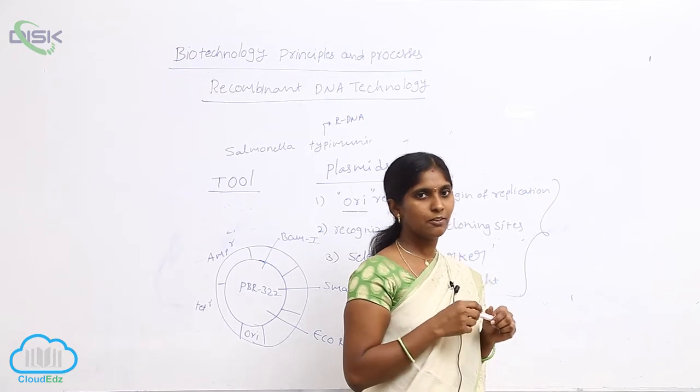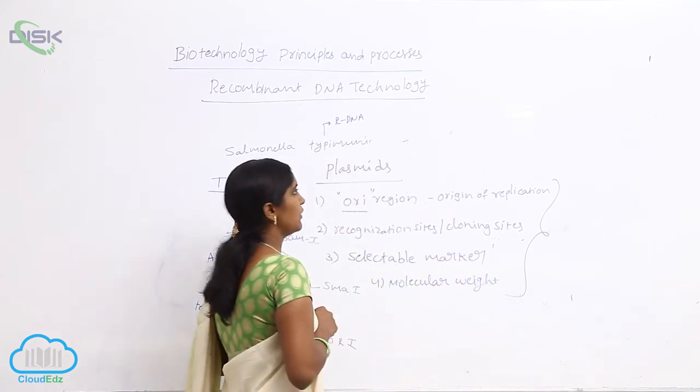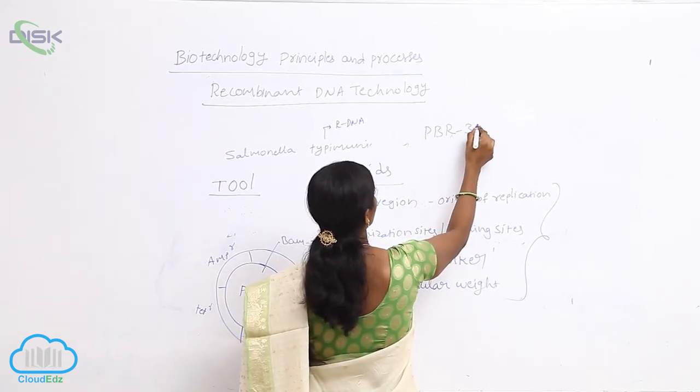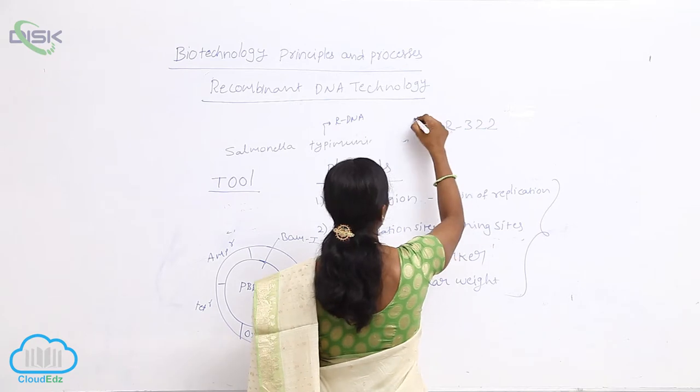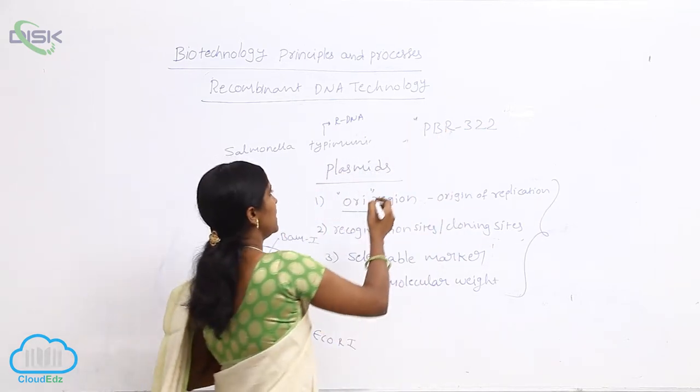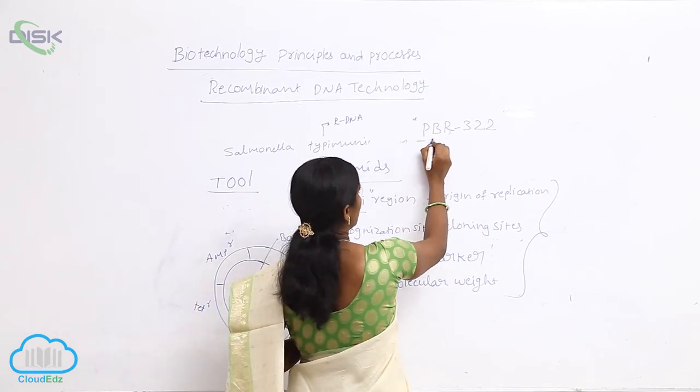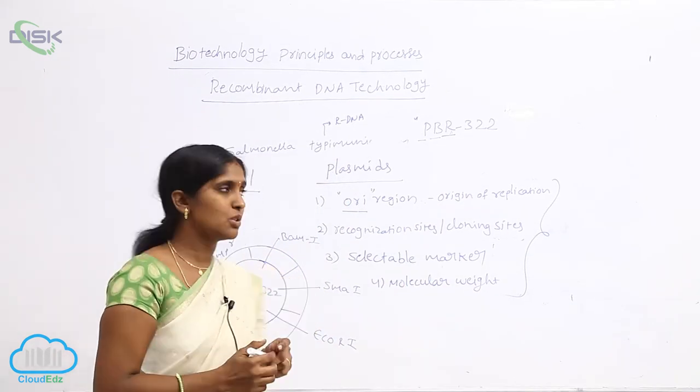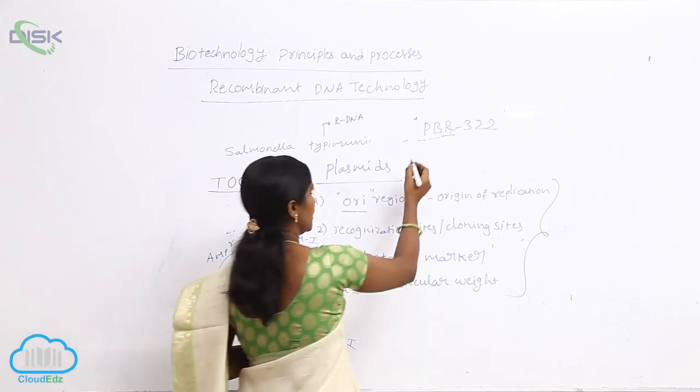The first derived plasmid is PBR322. P means plasmid, B for Bolivar, and R for Rodriguez. Bolivar and Rodriguez are two scientists who developed this PBR322. This is the ideal plasmid for RDNA technology.